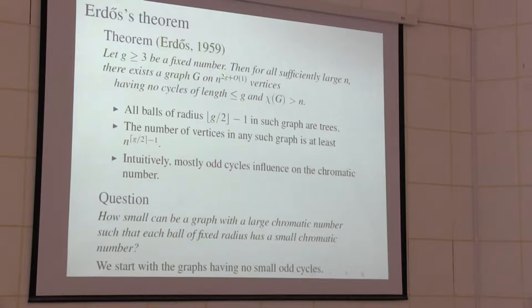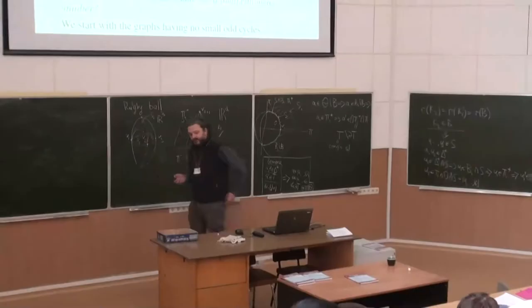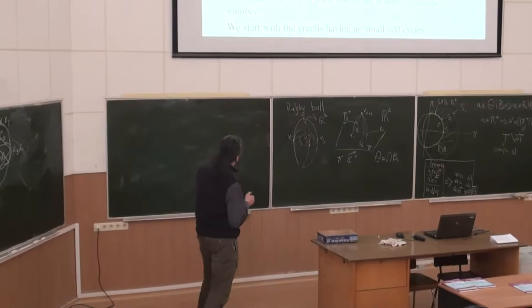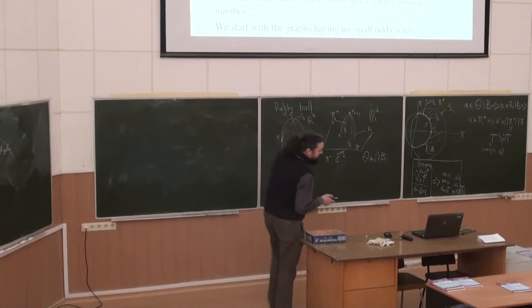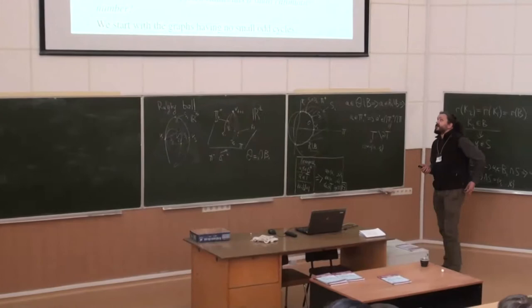Let's look at graphs which have no small cycles and large chromatic number. First of all, all balls of some radius — namely a radius which is a bit smaller than half the girth — are just trees, otherwise they would contain a small cycle. So surely they are bipartite.